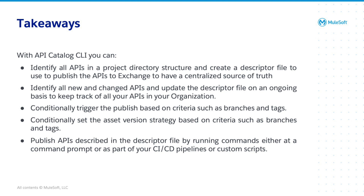You can identify all new and changed APIs and update the descriptor file on an ongoing basis to keep track of all your APIs in your organization. You can also conditionally trigger the publish based on criteria such as branches and tags, and conditionally set the asset version strategy based on those same criteria. Finally, you can publish APIs described in the descriptor file by running commands either at the command prompt or as part of your CICD pipelines or custom scripts.